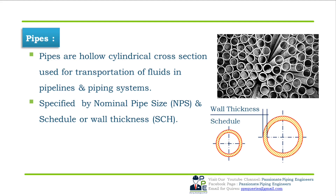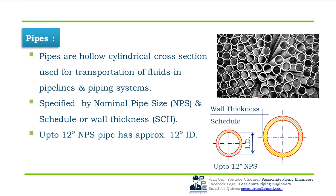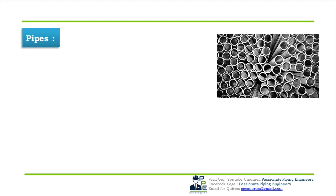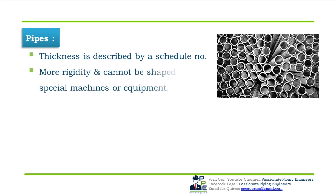Up to 12 inch NPS, a pipe has an approximate 12 inch ID. Above 14 inch NPS, pipes have an approximate OD (outside diameter). The thickness of the pipe is defined by a schedule number.